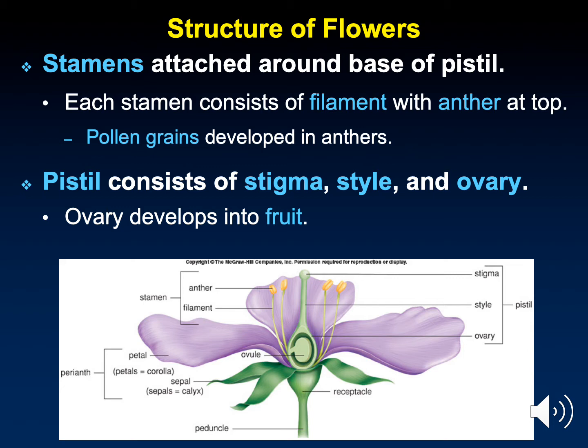The reproductive parts of the flower are the stamens and pistils. The stamens are where pollen production occurs. The stamen consists of an anther, where the pollen is actually made, and the filament, which attaches it to the receptacle.